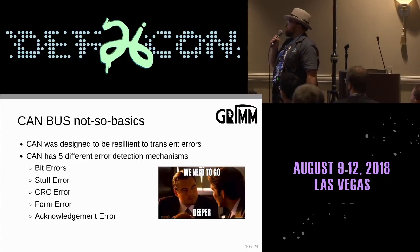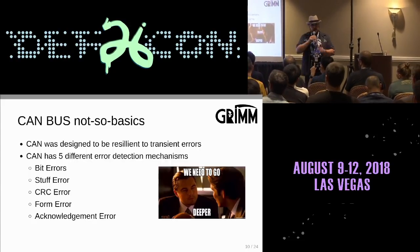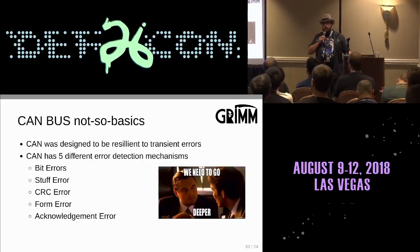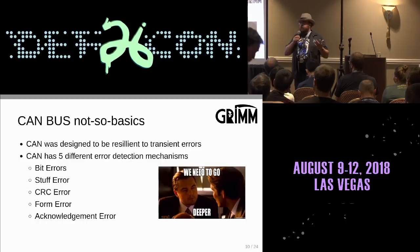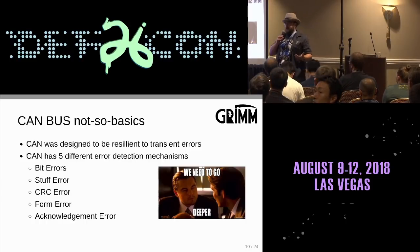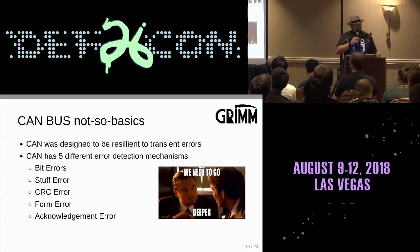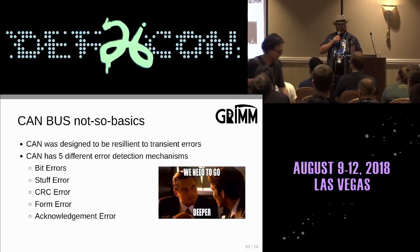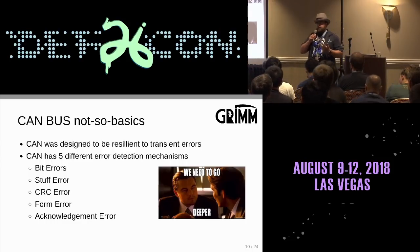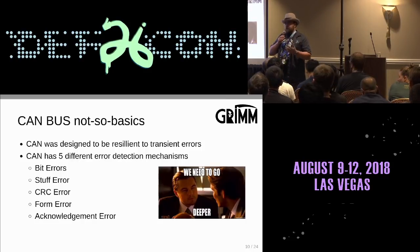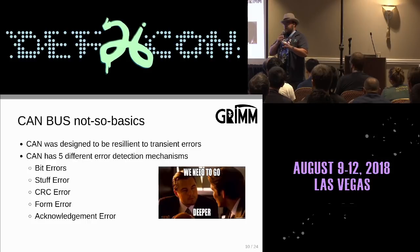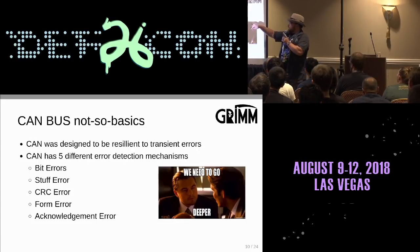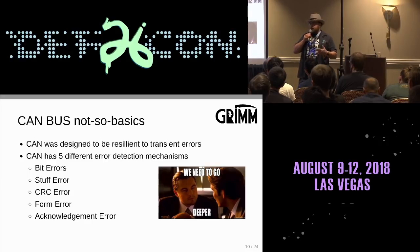CAN was designed to be resilient to transient errors like electromechanical noise. CAN has five different error detection mechanisms: bit errors, stuff errors, CRC errors, form errors, and acknowledgement errors. Bit errors are only detected by a transmitter — a bit error happens if the transmitter is sending a specific bit but reads back the opposite state from the bus. That will cause the transmitter to send an error frame and go into CAN's error handling.